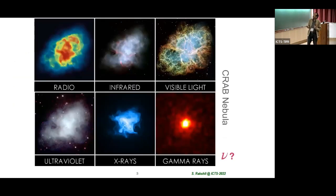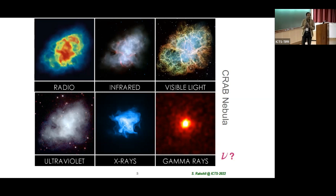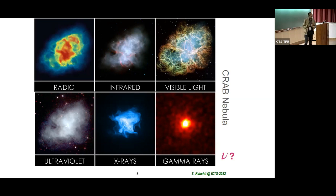We want to see astrophysical objects at different energy scales so that different dynamics are apparent by observing the same thing — the Crab Nebula — at different wavelengths. And we want to do it with neutrinos; we do not know how it looks like. So I will briefly review the multi-messenger astronomy.